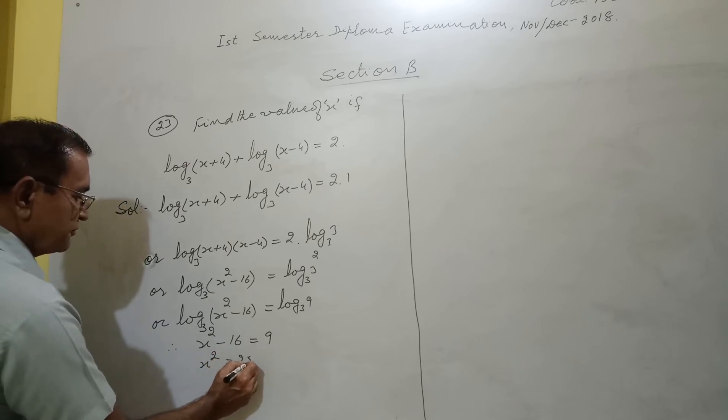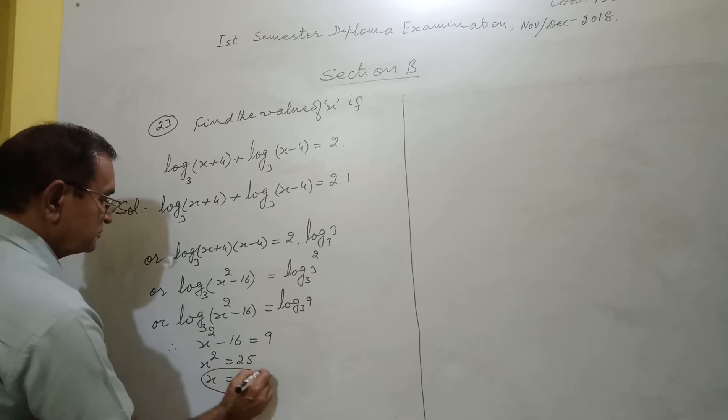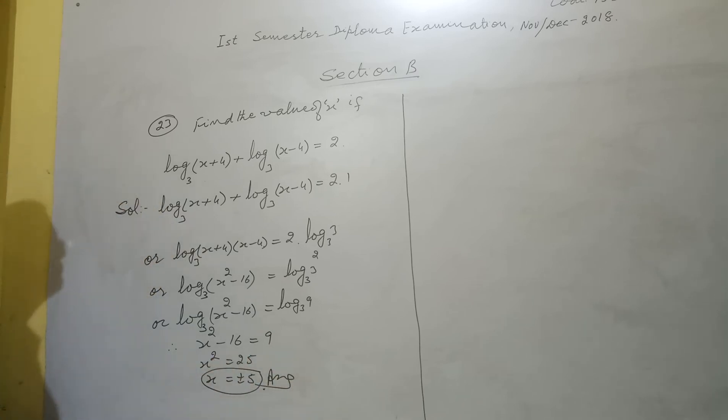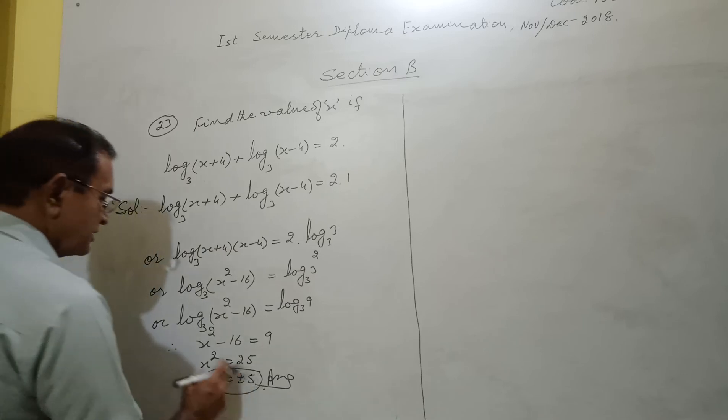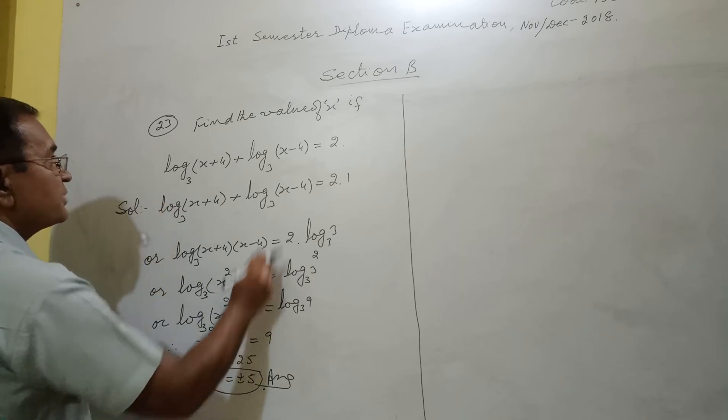X square equals 25. So x equals plus or minus 5. And one more adjustment we can do here. When we put here x equals minus 5, we will get minus 9.